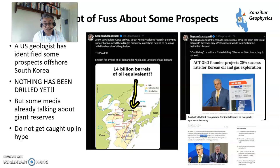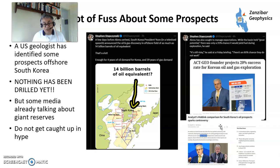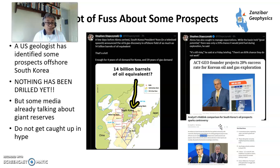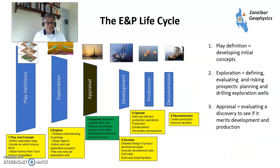We're getting a lot of fuss about some prospects this time in South Korea. An American geologist has identified some potential prospects offshore South Korea, but nothing has been drilled yet. Some prospects have been identified, but the media is already talking about giant reserves and getting caught up in the hype — this guy is being called the new Hiddink, the Dutch football manager who was South Korea's most successful foreign manager. I think that's a little unfair to KNOC, the Korean National Oil Company — they're very competent people. You've got a new person coming in with new ideas, maybe it might work, but don't get caught up in the hype because nothing has been proven yet.